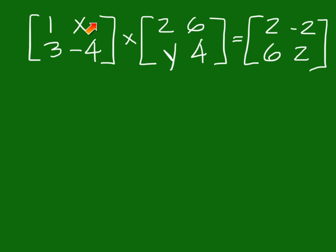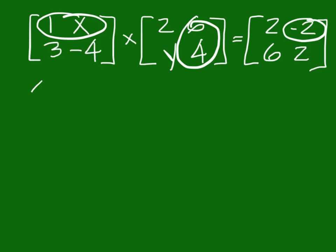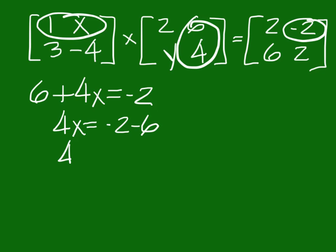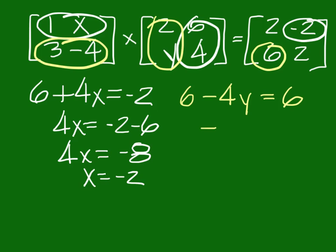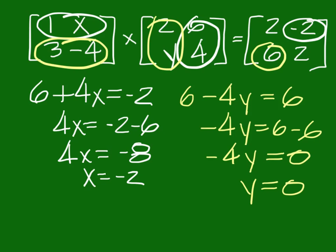So we have an X in this row but a Y in this column, so we can't use that column. We can use column 2. So row 1, column 2 is the negative 2 in the end matrix. That would come out to be 6 plus 4X equals negative 2. 4X equals negative 2 minus 6, which is negative 8, and X is negative 2. Now we have this column for the Y — let's use this row and this column. Row 2, column 1 is 6. So 6 minus 4Y equals 6. Negative 4Y equals 0, so Y equals 0. The answers are 0 and negative 2.